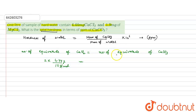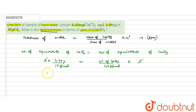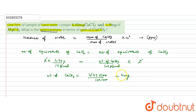The number of equivalents of calcium carbonate equals weight of calcium carbonate divided by its molecular weight (100 g/mol), multiplied by its valency factor of 2. Solving: weight of CaCO₃ = 4.44 × 100 / 111, which gives 4 milligrams. So the weight of calcium carbonate from calcium chloride is 4 milligrams.